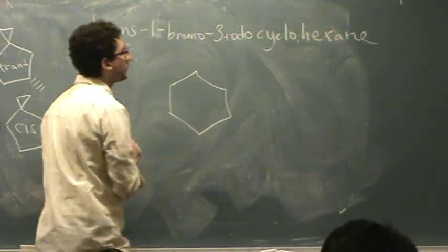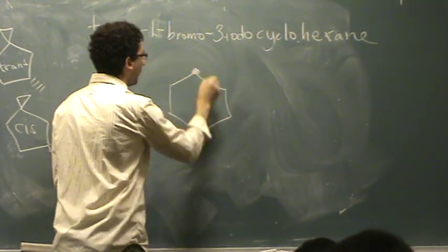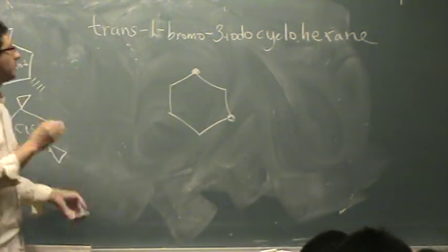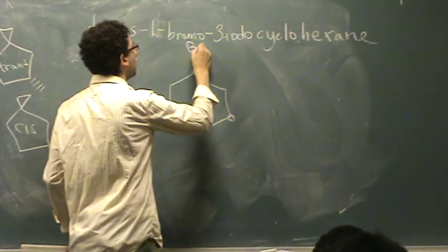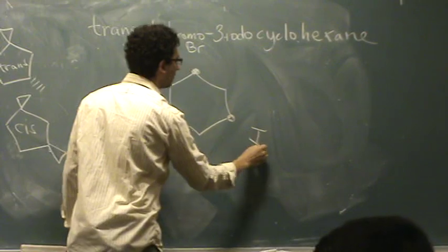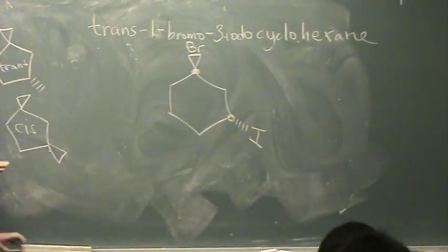Well, draw the cyclohexane. Start with the base first. You know, on the one position and the three position there's something. On one there's bromo, three there's iodo. Since you want it trans, you want one to be a triangle and the other to be a dash. In this example, it doesn't matter which is which. Is that okay?